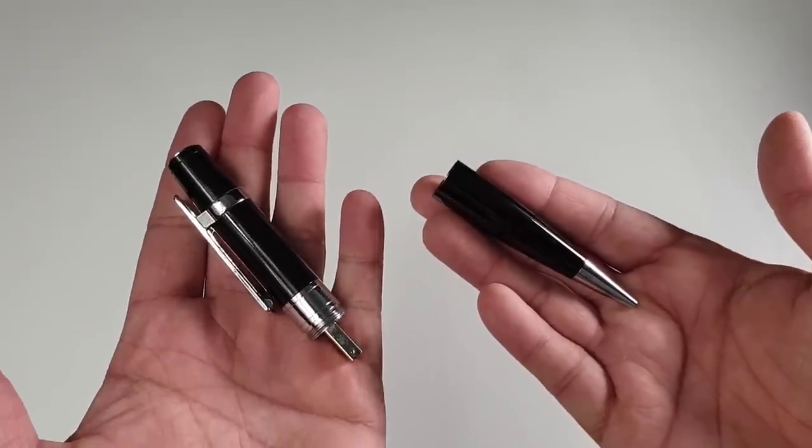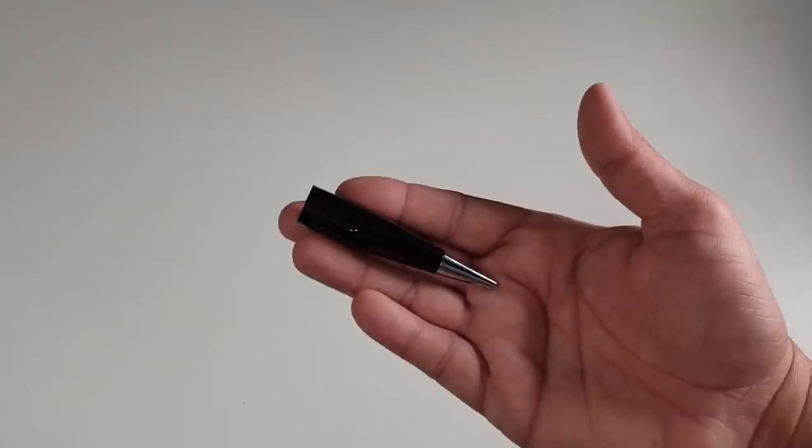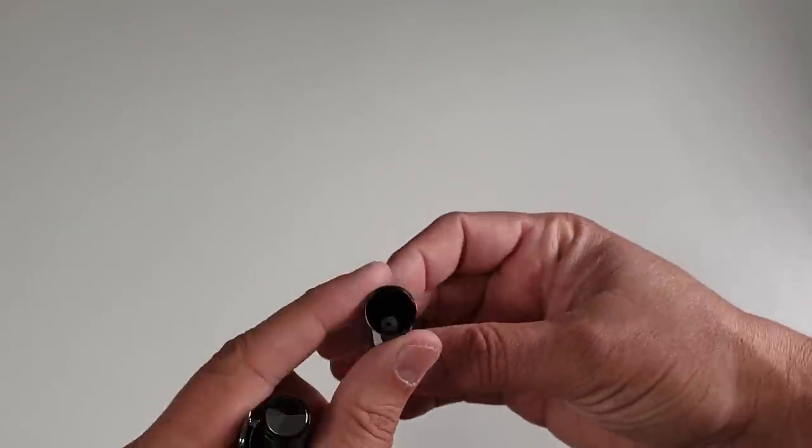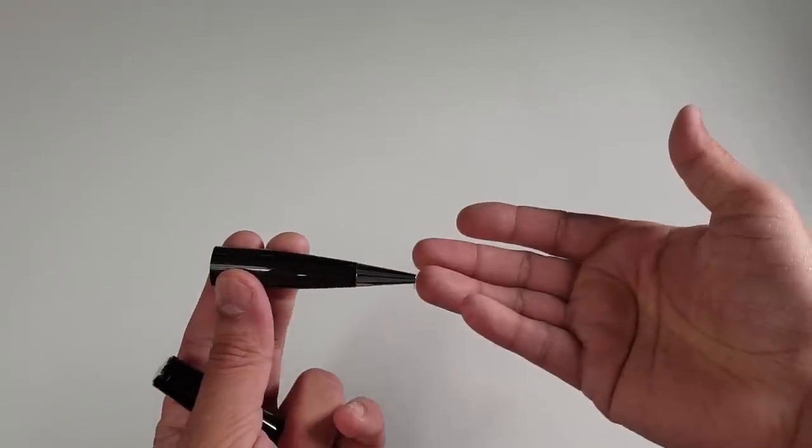Now this spy pen is divided into two parts: one with the camera and a USB drive system, another one is the pen itself. So you can change the refill by using the screwdriver, take it out, simple as that, very easy and straightforward.